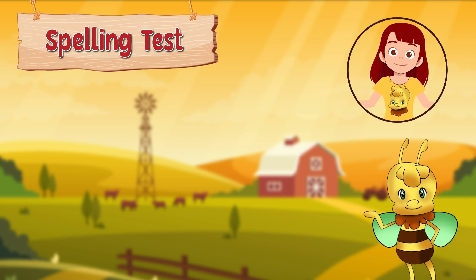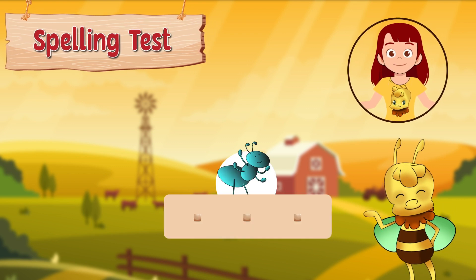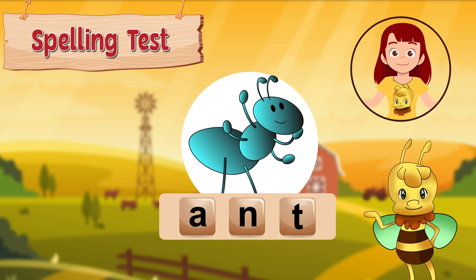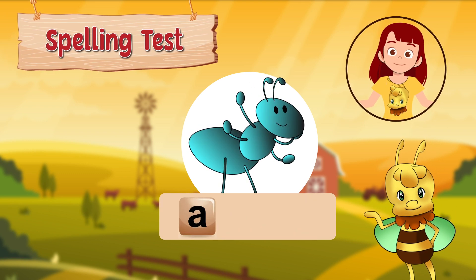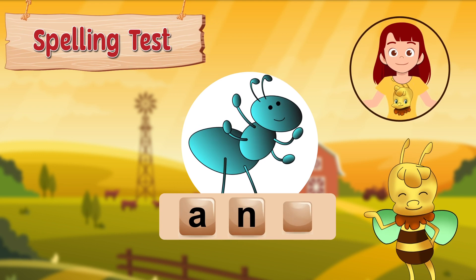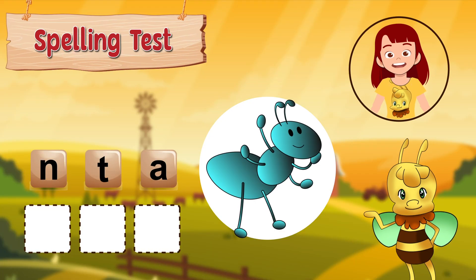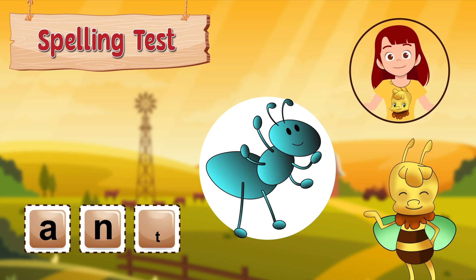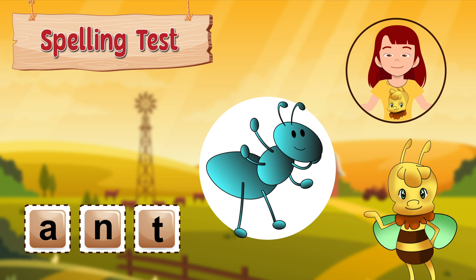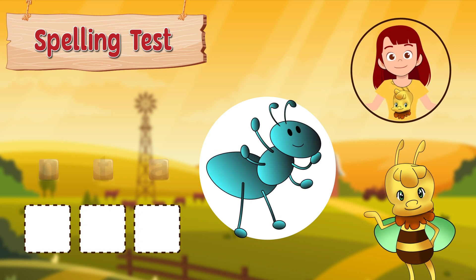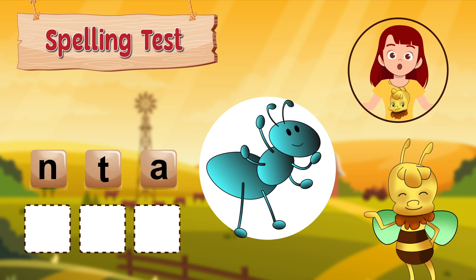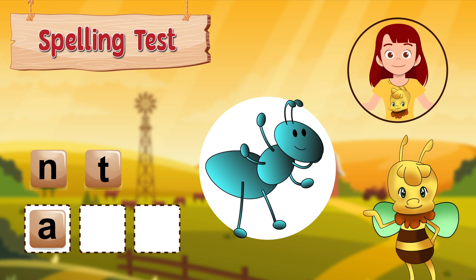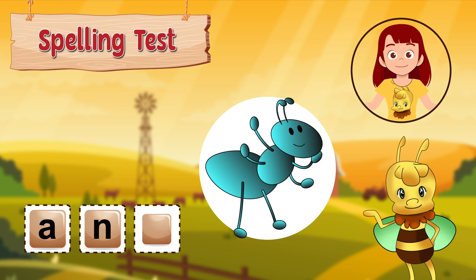We'll start with an easy one. Ant. An ant is a type of insect. It is spelt A-N-T. Shall we spell it together? A-N-T. Now you try! How do you spell Ant? It's spelt A-N-T.